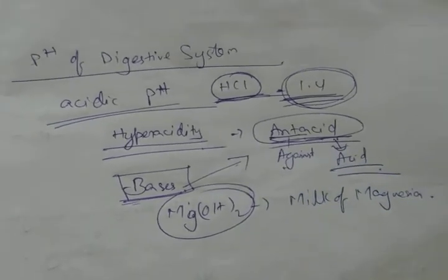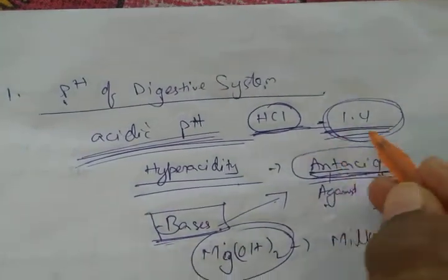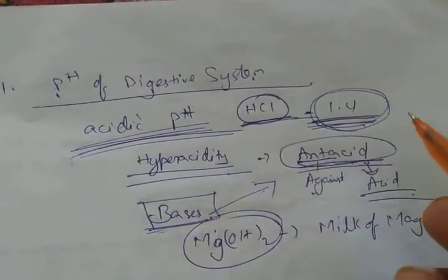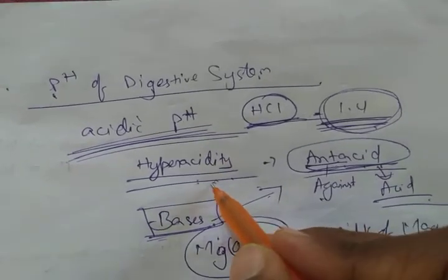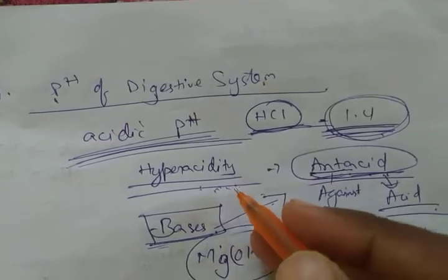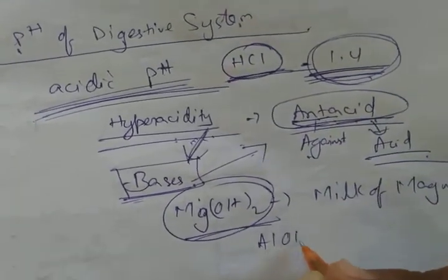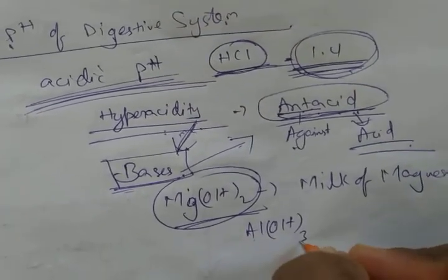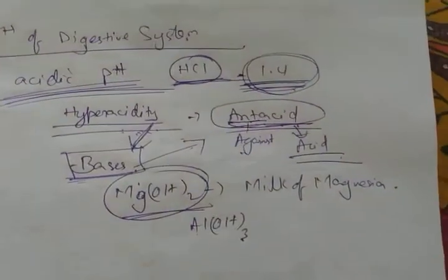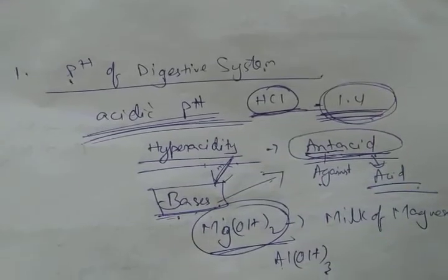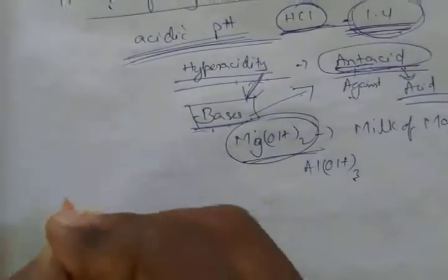The pH of the digestive system is very important - it is acidic near 1.4, but if it drops below its limit we suffer from hyperacidity. We may feel burning sensation and pain in the inner lining of the stomach. We take bases as they work like antacids, for example magnesium hydroxide or aluminum hydroxide gel. They give relief from this condition by reacting with acids and neutralizing them.